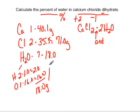So this is the mass of one mole of water. And remember, in the formula, we have two of them. So 2 times 18 is going to be 36.